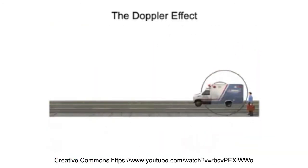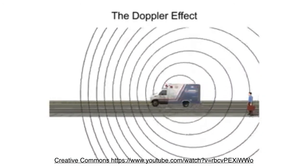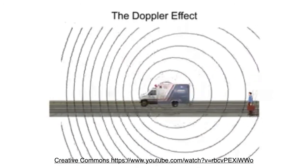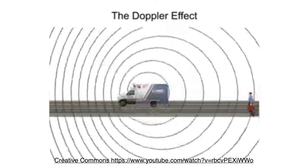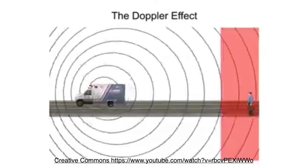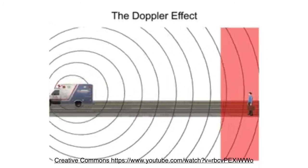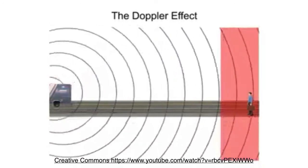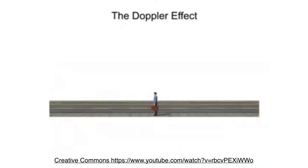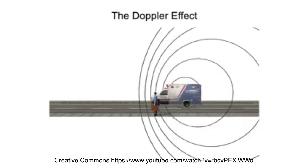As the ambulance passes by and moves away, the sound waves of the siren are stretched out. Thus, the frequency of the wave is diminished, resulting in a perceived lowering of the pitch from the observer's point of view. The observed effect is that when the ambulance approaches and then departs, an observer will hear the siren shift from a high pitch to a low pitch.